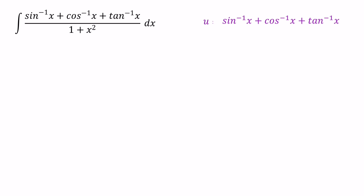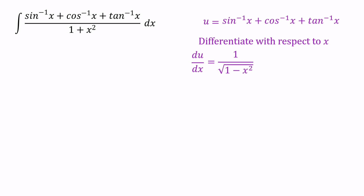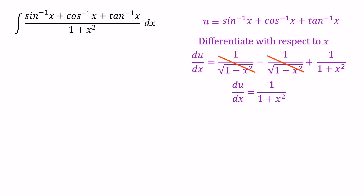Substitute sin inverse x plus cos inverse x plus tan inverse x as u. Differentiating with respect to x: du/dx equals the derivative of sin inverse x, which is 1 over square root of 1 minus x squared, plus the derivative of cos inverse x, which is negative 1 over square root of 1 minus x squared, plus the derivative of tan inverse x, which is 1 over 1 plus x squared. The first two terms cancel out, giving us du/dx equals 1 over 1 plus x squared. Cross-multiplying, dx equals 1 plus x squared times du.